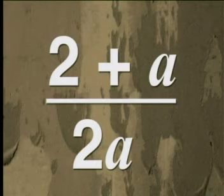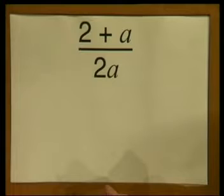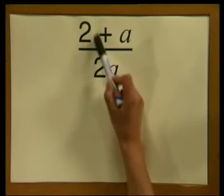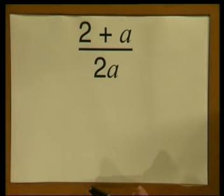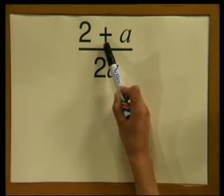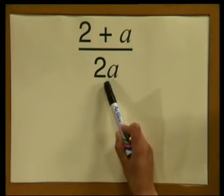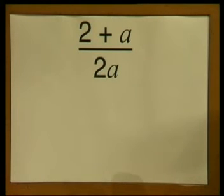Now let's do example number 3. Can this be simplified? No, this fraction cannot be simplified. Why not? The numerator consists of terms, 2 and a, and not factors, and we can only cancel factors. Remember, terms are separated by a plus or a minus sign. In this case, the terms are separated by a plus sign, and only the denominator consists of factors 2 and a. This fraction cannot be simplified.